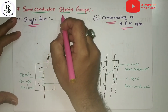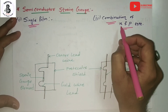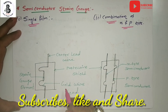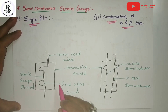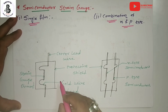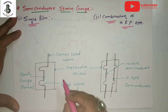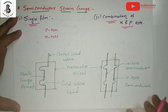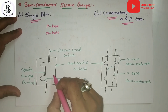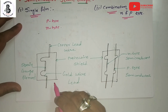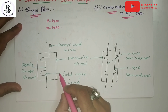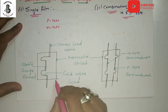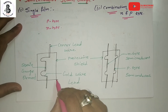For semiconductor strain gauges, there are two types: single film, and a combination of N and P type. These gauges are produced in wafers from silicon or silicon and germanium crystals, in which an exact amount of spatial impurities such as boron is added to impart certain desirable characteristics. The two semiconductor types are P type and N type. The semiconductor gauges are usually provided with plastic or stainless steel backings, bonded onto the test surface by the same methods as wire and foil gauges.